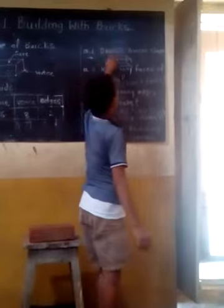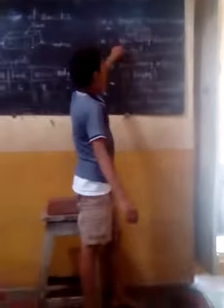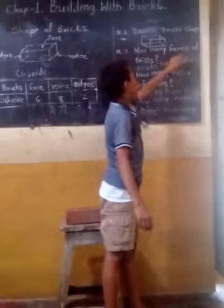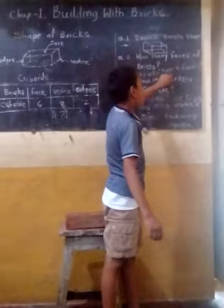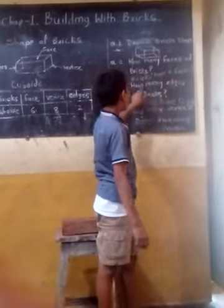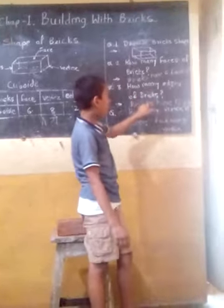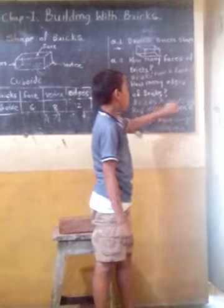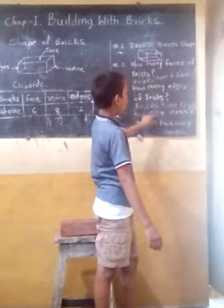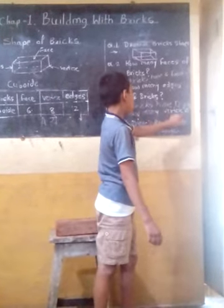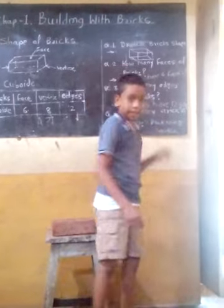Here is a question. Draw a brick shape. How many faces do bricks have? Bricks have six faces. How many edges do bricks have? Bricks have twelve edges. How many vertices do bricks have? Bricks have eight faces.